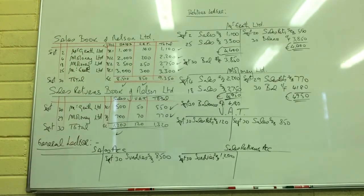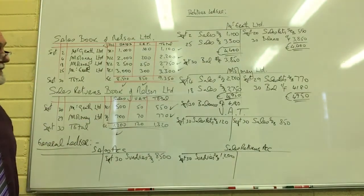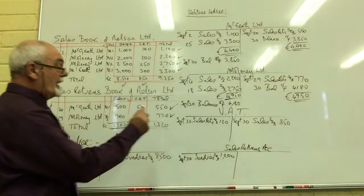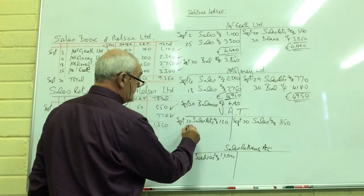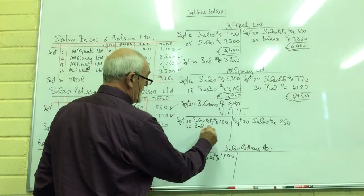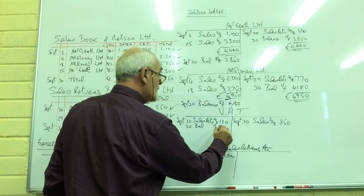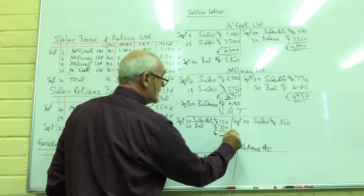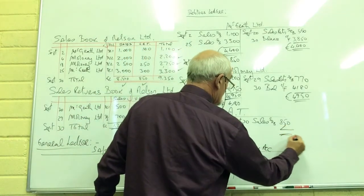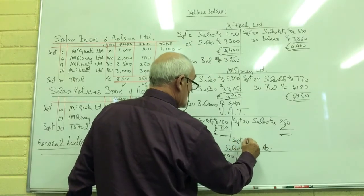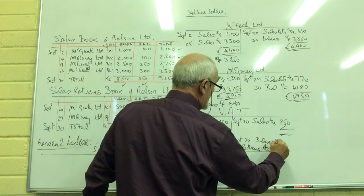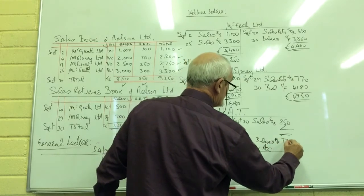The sales account has a credit balance of £8,500, and the sales returns account has a debit balance of £1,200. The VAT account balance at September 30th — the balance to be carried forward — would be £730, a credit balance to be carried forward. September 30th, balance brought forward £730.